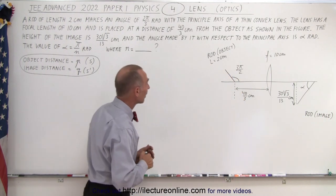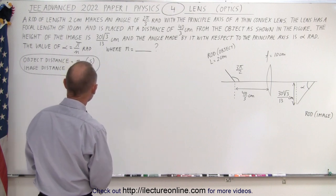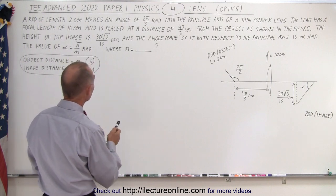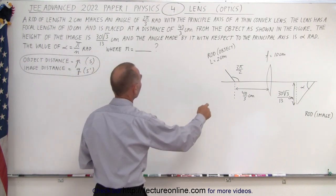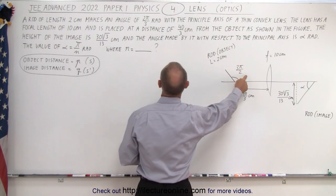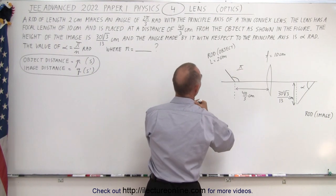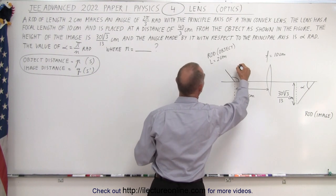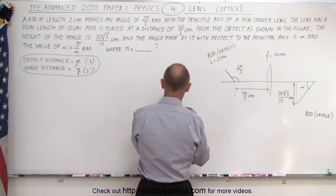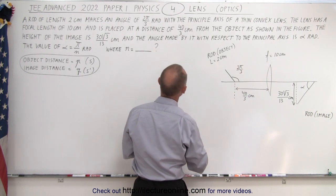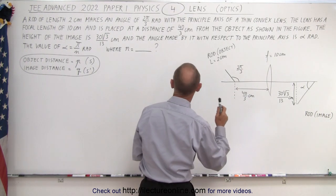Let's read the problem. A rod of length 2 centimeters makes an angle of 2π over 3 radians — 2π over 3 radians — with the principal axis of a thin convex lens.